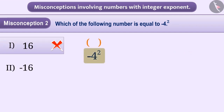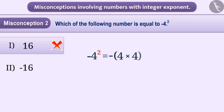Here, brackets are not used, which shows that the power is only of 4 and not the minus sign. Therefore, it is right to write minus 4 to the power 2 as minus of 4 into 4, which gives us the correct result minus 16. Hence option 2 is the correct answer.